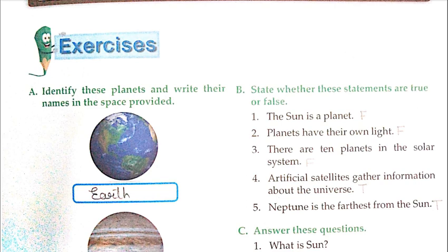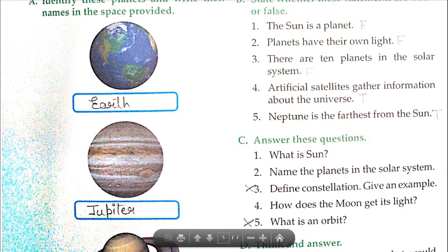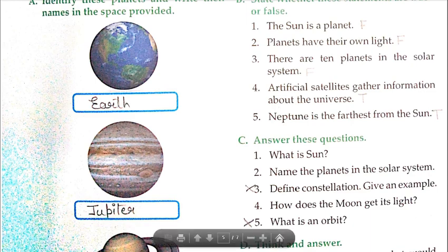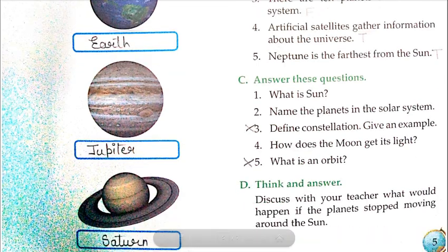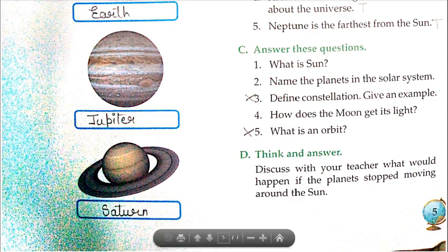Exercise A: Identify these planets. The first image shows lots of blue and some green — the blue indicates water and green indicates land, so this is Earth. The second image has red patches visible on it, which is Jupiter's famous Great Red Spot. The third image has rings around it made of ice, dust, and stones — that is Saturn.